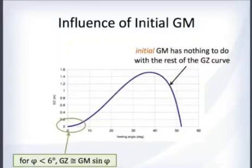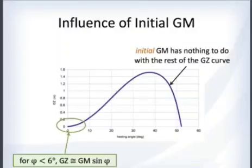It is important to note that the initial GM has absolutely nothing to do with the rest of the GZ curve. GM is only relevant for very small angles of heel — less than about 6 degrees.